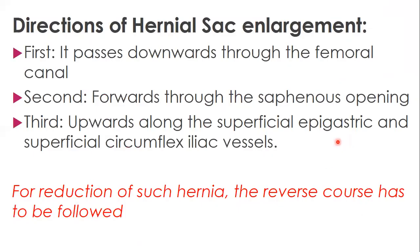The hernia passes downwards from the femoral canal and extends forwards through the saphenous opening. After coming out of the saphenous opening, it projects upwards along the superficial epigastric vein. Knowing this route helps the surgeon when correcting it by reversing its movement using the same pathway.